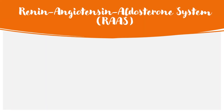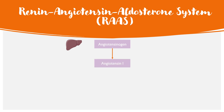Now that we understand that aldosterone is secreted from the adrenal glands, we can move on to understanding how aldosterone is regulated within the renin-angiotensin-aldosterone system, or the RAS system. We start with angiotensinogen, secreted by the liver, which is converted to angiotensin 1 via an enzyme called renin, produced in the kidneys.